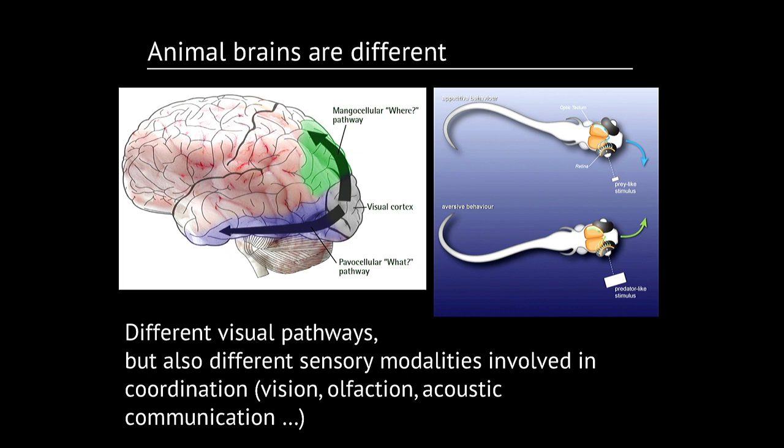If you move to a different taxon, to fish, they do not even have a cortex. This visual processing happens in a completely different area that is apart millions of years of evolution from what you can have in mammals. So, there is no reason to find universal rules of interaction across these species, because they are different.